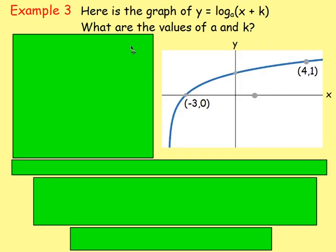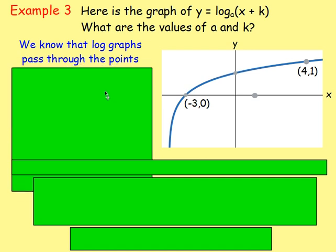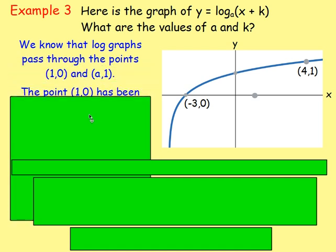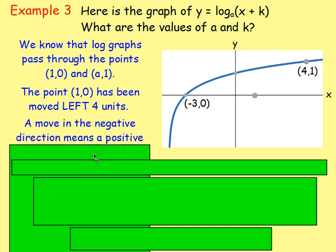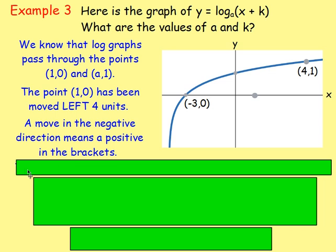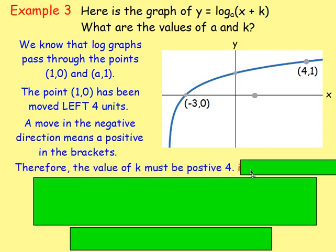Let's look at one last example — Example 3. Here's the graph of y equals log base a of (x plus k). What are the values for a and k? You need to think about the points your log graph passes through: a log graph always passes through (1, 0) and (a, 1). However, this graph is not passing through (1, 0) — it has been shifted to the left four units and is now passing through (-3, 0). A move in the negative direction means a positive value inside the brackets, so the value of k must be positive 4.